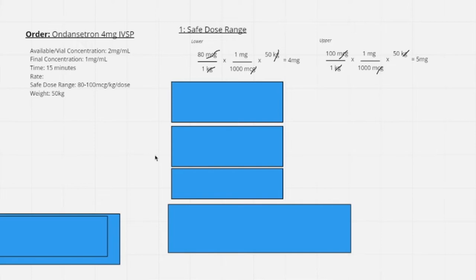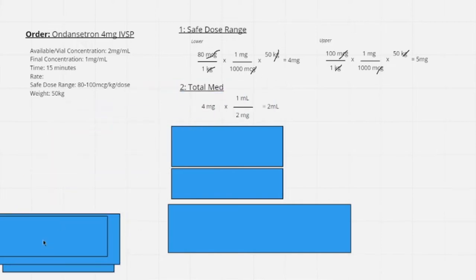Next, we calculate our total medication. We take our order of 4 milligrams and multiply it by the available vial concentration of 2 mg/mL. Since the order is in milligrams, we place milligrams on the bottom to cancel units: 4 mg ÷ 2 mg/mL = 2 milliliters. That is our total medication volume.